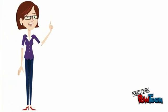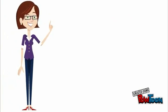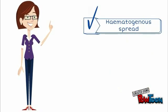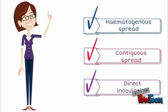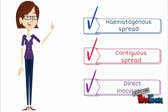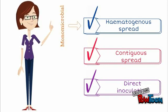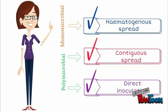There are three main mechanisms by which infection can get into the bone. Osteomyelitis can occur as a result of haematogenous seeding during a bacteraemic episode, contiguous spread of infection from adjacent soft tissues and joints, or by direct inoculation of infection into the bone as a result of trauma or surgery. Infection from haematogenous spread is usually monomicrobial, while osteomyelitis due to contiguous spread or direct inoculation is usually polymicrobial.